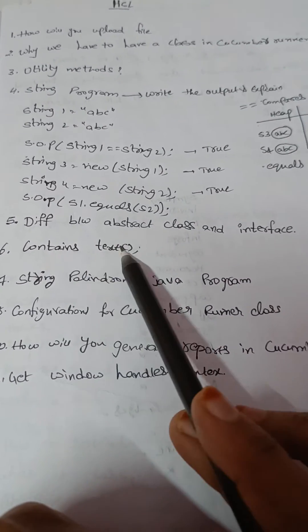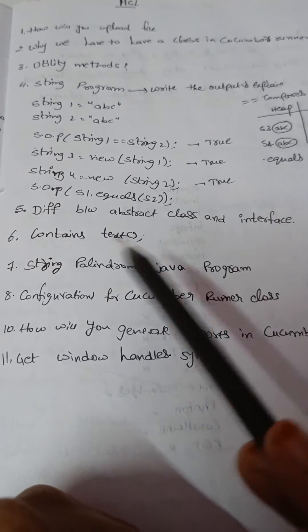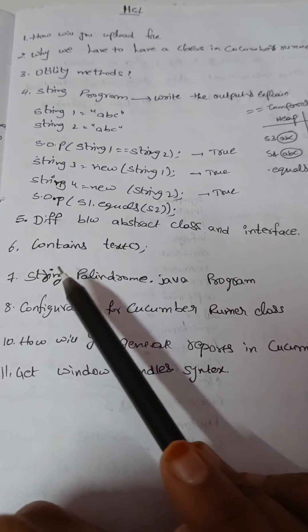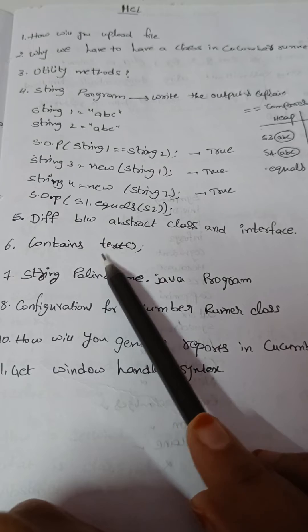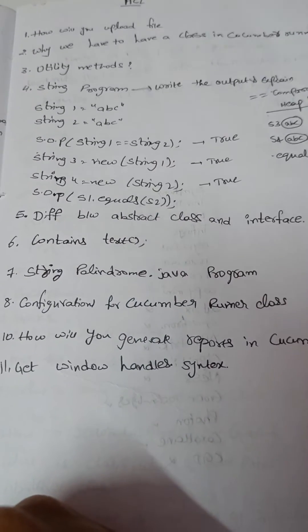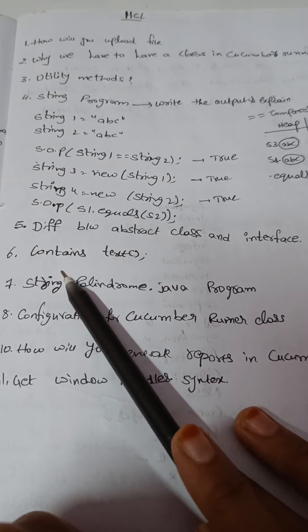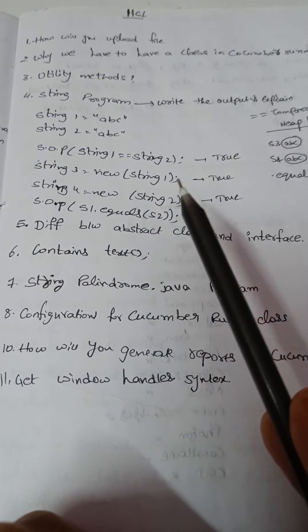And fifth question is difference between abstract class and interface. This is a java based question. Again and then we have to write a like we do have locators in Selenium right. So we have to write a contains text of xpath.